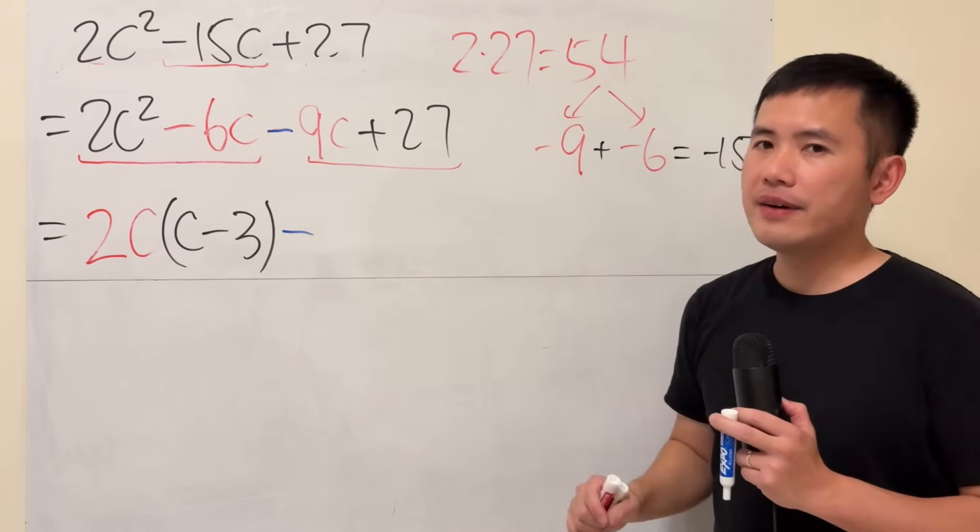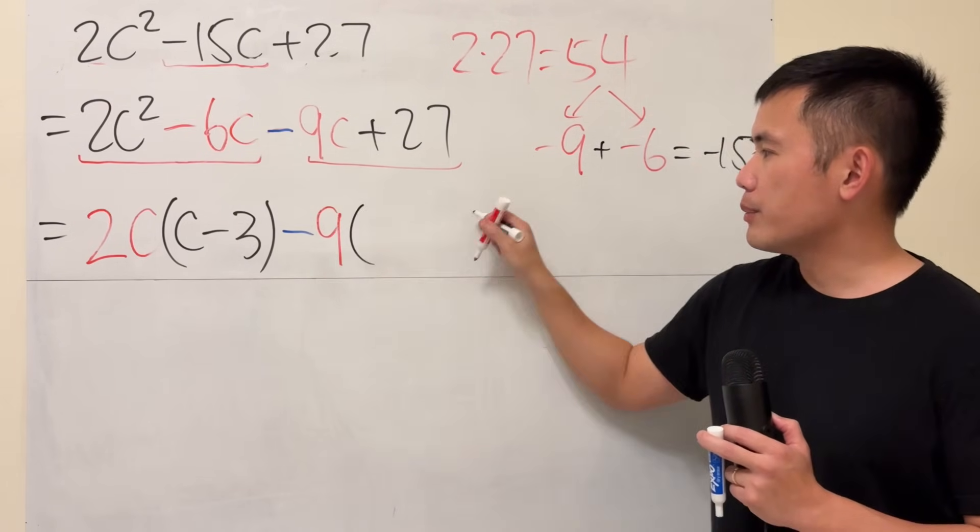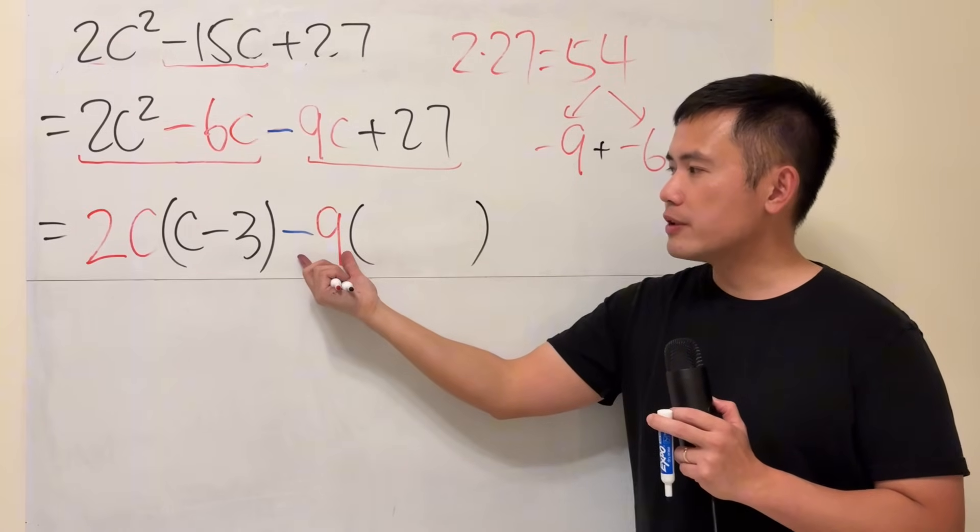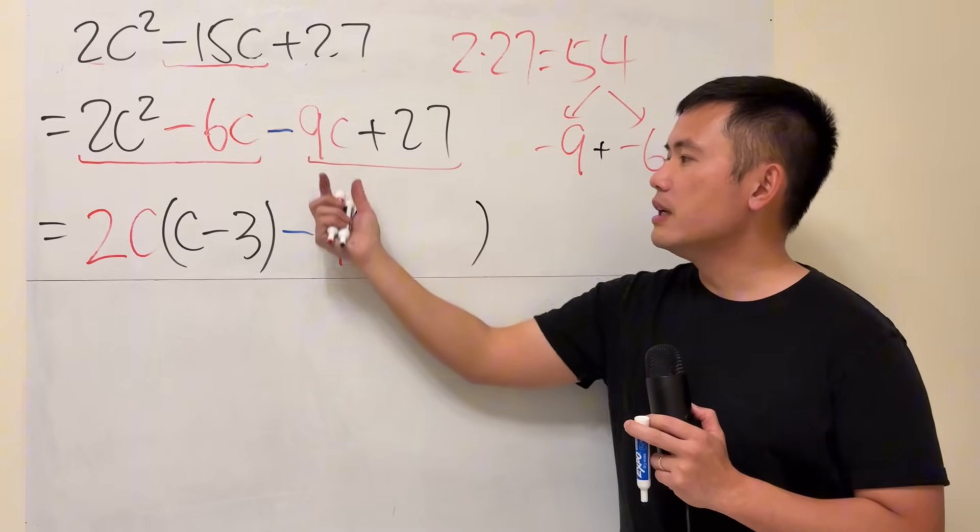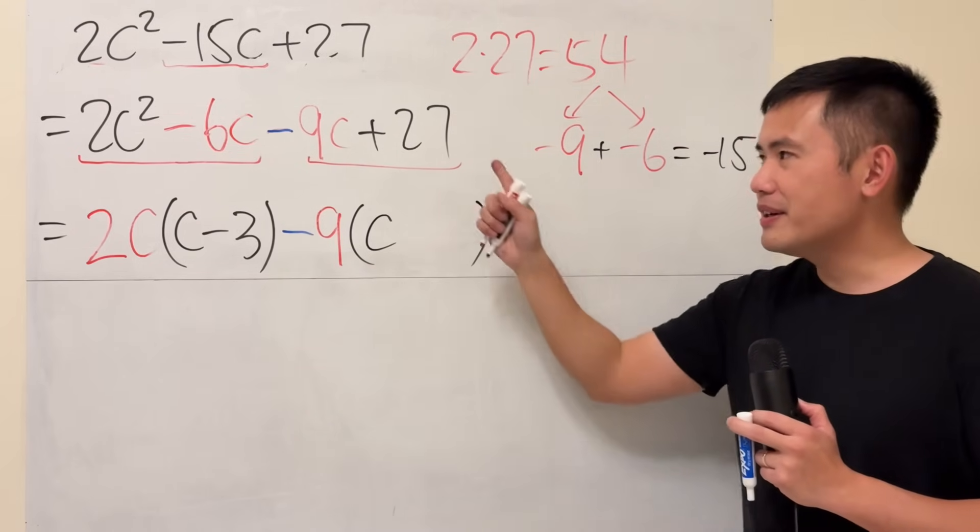And then right here, we have 9 and 27. We can factor out 9. And then put on parentheses. Here. Originally, we have negative 9c, and then we factored out the negative 9. Just think about this as negative 9c divided by negative 9. We will have c left.